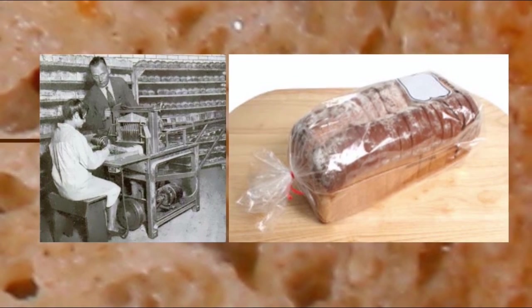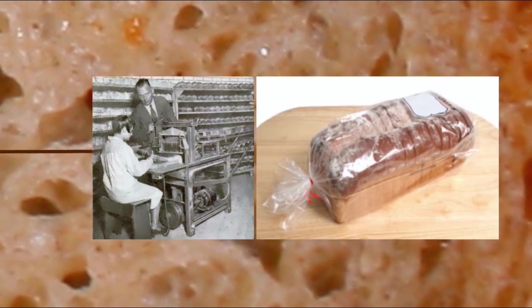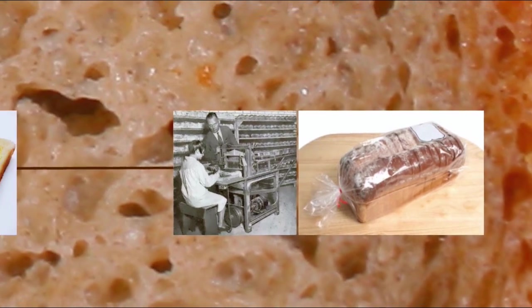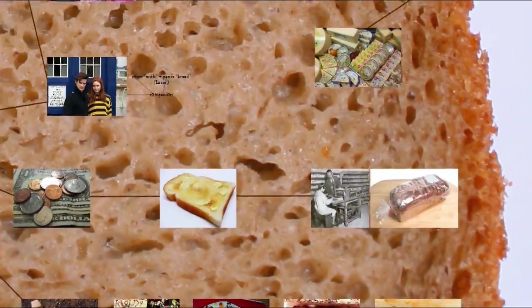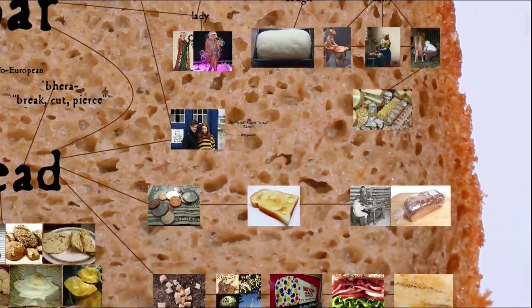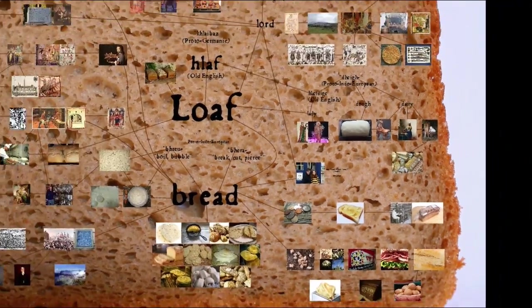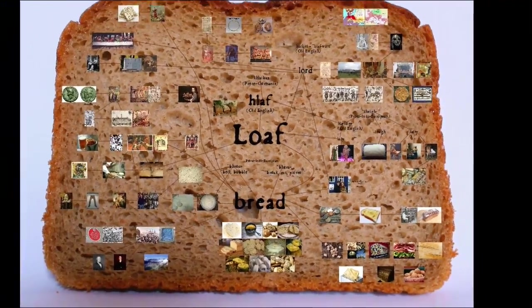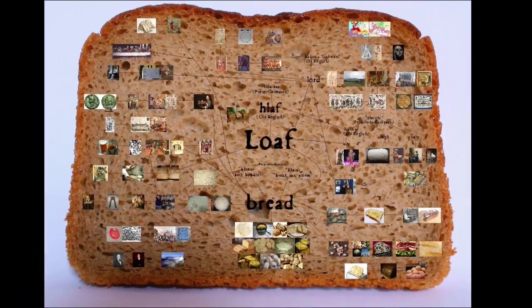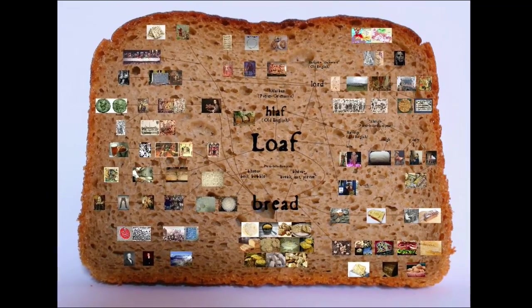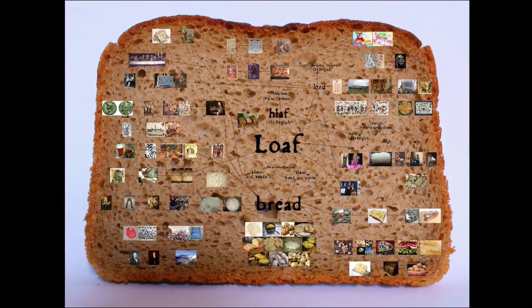When you think about it, this is the final dramatic step in a remarkable process which took bread from the central unifying element in society, as evidenced by the loaf-lord connection, through industrialization, to convenience food — since we don't even need to slice our own bread anymore. But it shows us that bread is still important to us since we compare all other progress to how happy we are to have our bread pre-sliced for us.